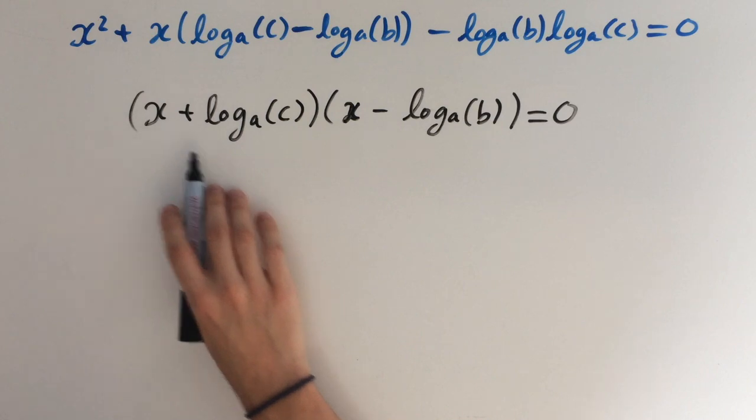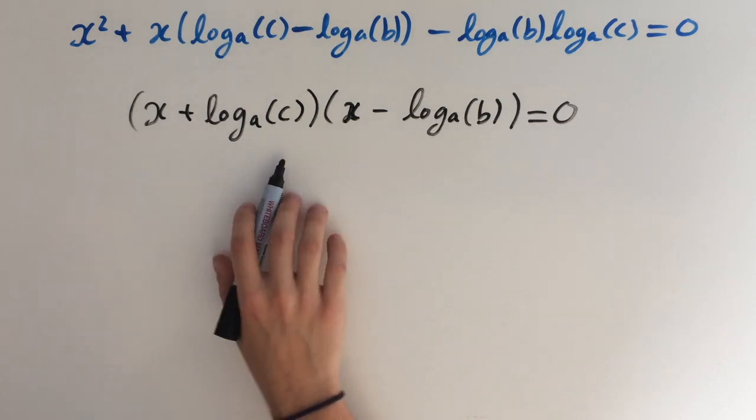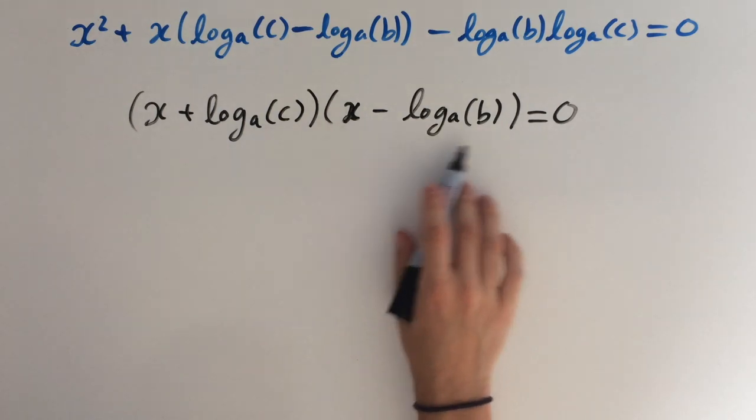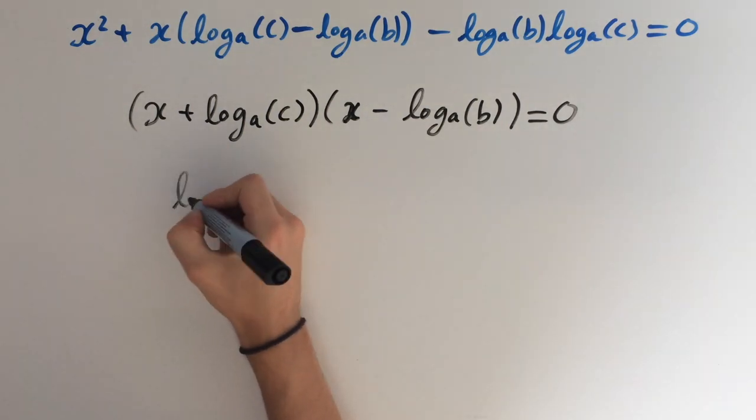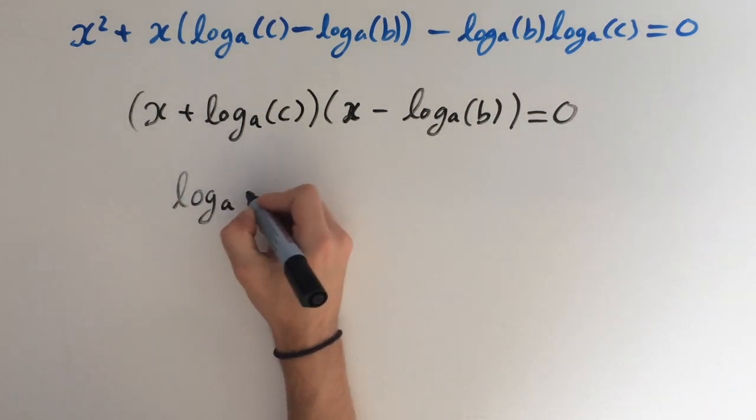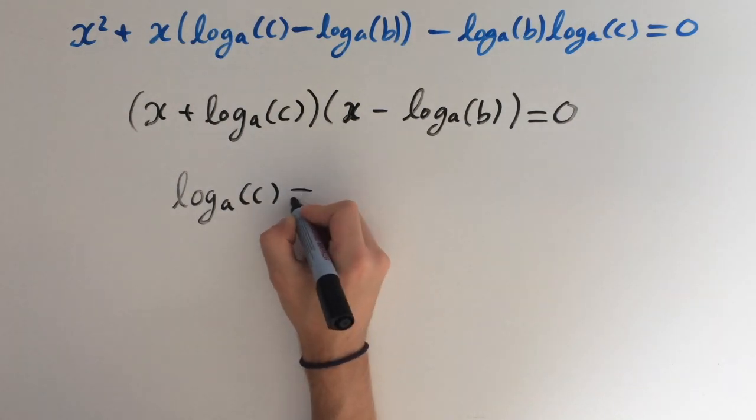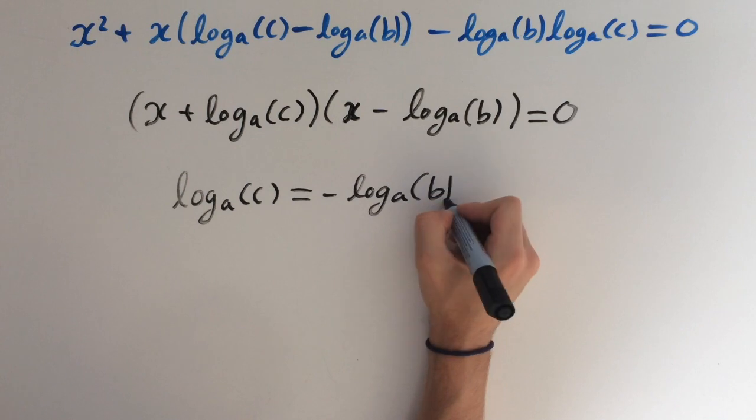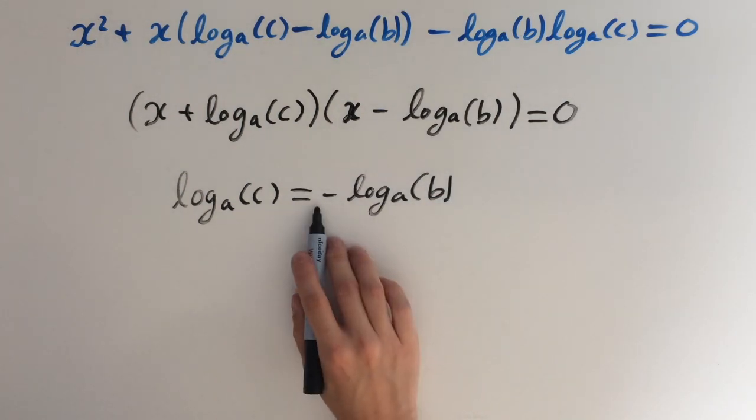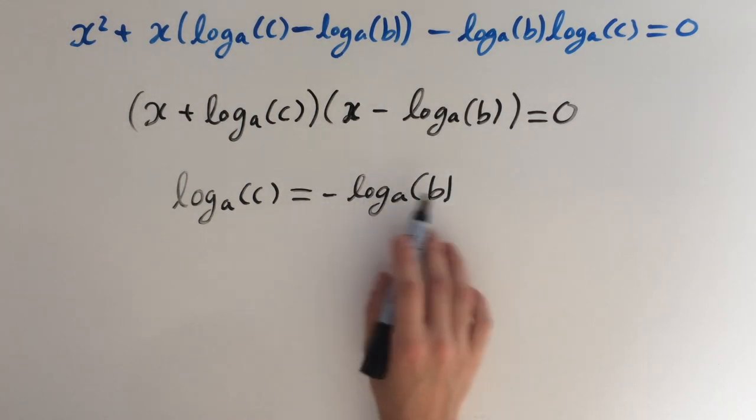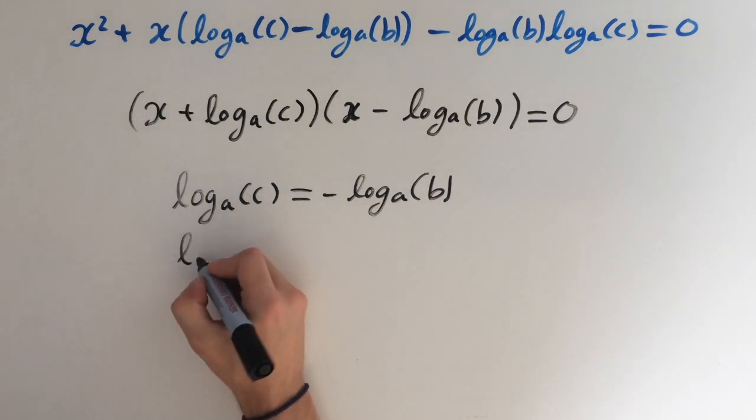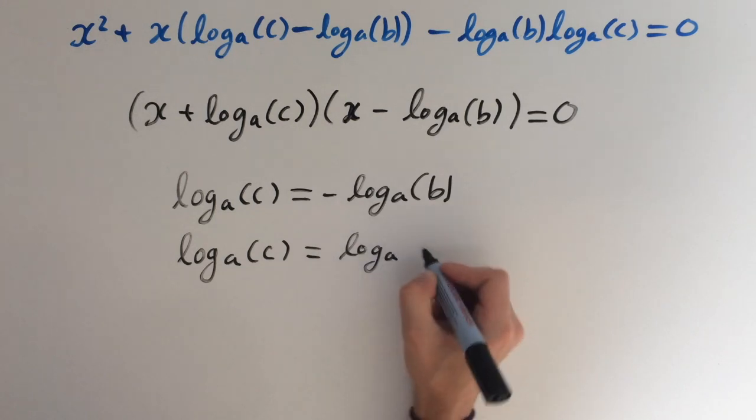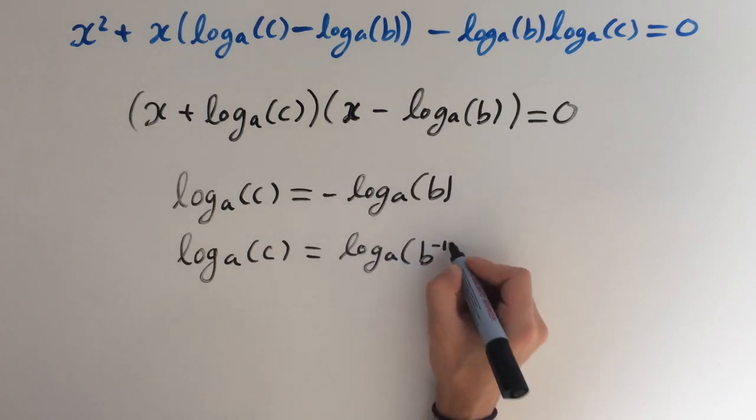Now we want this equation to have a repeated root, so both of these brackets have got to be equal to each other. So we need the constants inside to be equal to each other. So we're going to get log base a of c is going to equal minus log base a of b. And here we can use the power rule in reverse, so we're going to bring the minus 1 to inside the bracket. So we get log base a of c equals log base a of b to the minus 1.